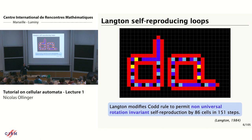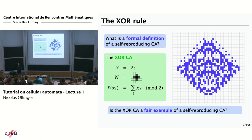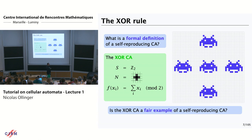I've seen positive examples, but you people here like theorems, so you need a definition. For example, does this look like self-reproduction? This is the XOR rule: you have two states and you just do the sum of two of your four neighbors and yourself. Starting from some pattern, after some time you'll see copies of the pattern, but it's just because of the way that two behaves. That's not very satisfying to call self-reproducing, so you need a formal definition to deal with that.